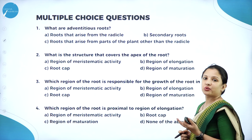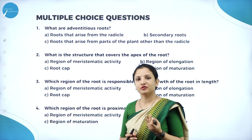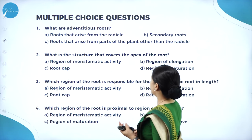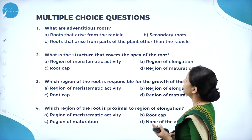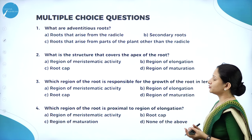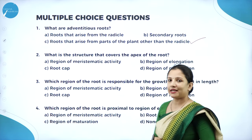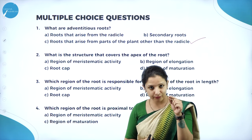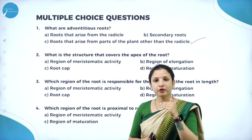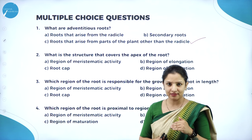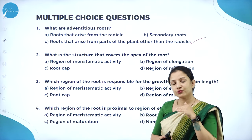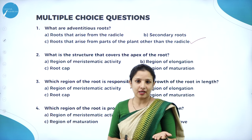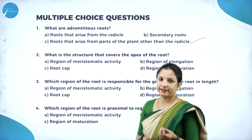What are adventitious roots? We learned the different types of roots: fibrous root, tap root, and adventitious roots. Adventitious roots are roots that arise from parts of the plant other than the radicle. In the embryonal axis of the seed, on one end there is the plumule and on the other is the radicle. From the radicle, the root arises. But adventitious roots do not arise from the radicle — they arise from other parts, such as from the nodes of the stem as in sugarcane, or from branches as in the banyan tree.